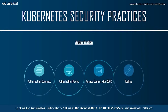Moving on to authorization: authorization is assigning permissions to users and applications and enforcing them. Kubernetes verifies whether a certain action is allowed by a certain user or application; if allowed, it performs the action, otherwise it rejects it and potentially logs the attempt. Kubernetes authorizes API requests using the API server, which evaluates request attributes against policies and allows or denies the request. By default, permissions are denied unless explicitly allowed by a policy.